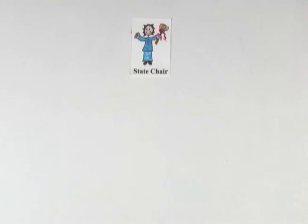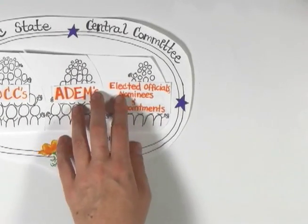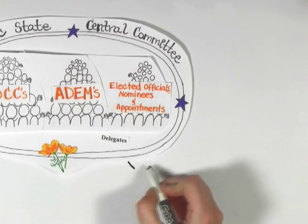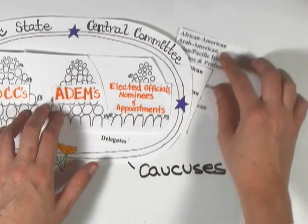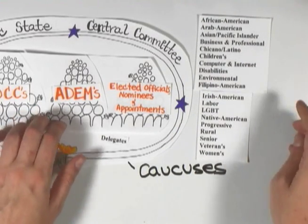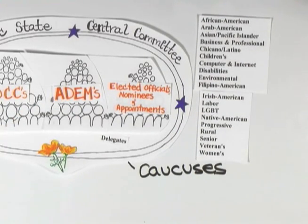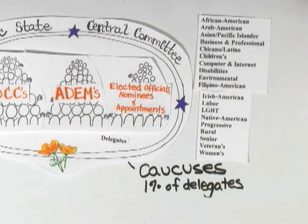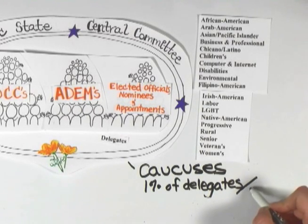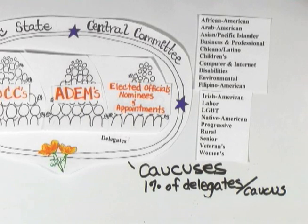The caucuses, on the other hand, are self-organized groups who represent certain constituent groups within the party. There are currently about 20 caucuses, including the African American caucus, the labor caucus, and the veterans caucus. Each caucus must include at least 1% of the entire state party delegation, but is otherwise allowed to determine its own eligibility requirements for membership. This means that some caucuses have members, and some caucuses even have officers, who are not delegates.